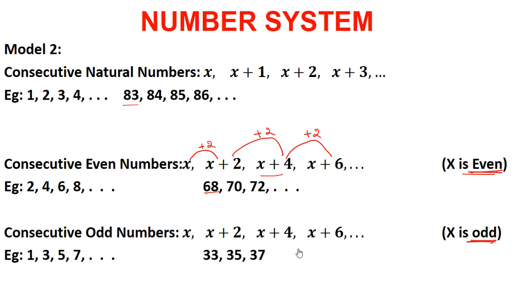For example, 33, 35, 37 are three consecutive odd numbers. If x = 33, then x+2 = 35 and x+4 = 37. The key point is that consecutive even and consecutive odd numbers are both represented as x, x+2, x+4 and so on — where x is even for consecutive even numbers and x is odd for consecutive odd numbers — and the difference is always 2.